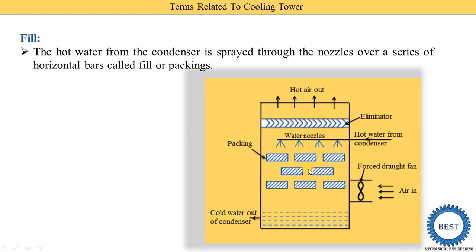Here I show you the image of force draft cooling towers. You can see water from the condenser is entered here and it is sprayed by using these water nozzles. This spray water comes in contact with the packing. When this water strikes with the packing, it splashes the water, further dividing it into small droplets.